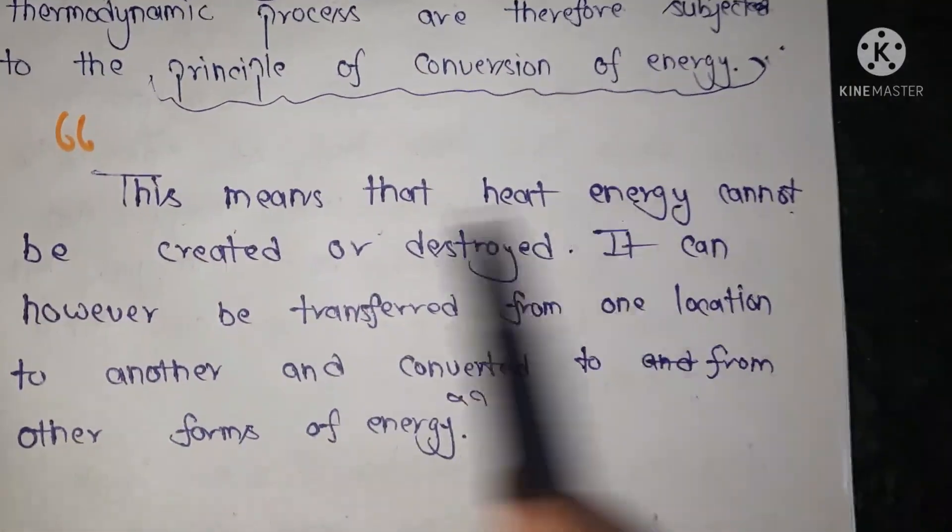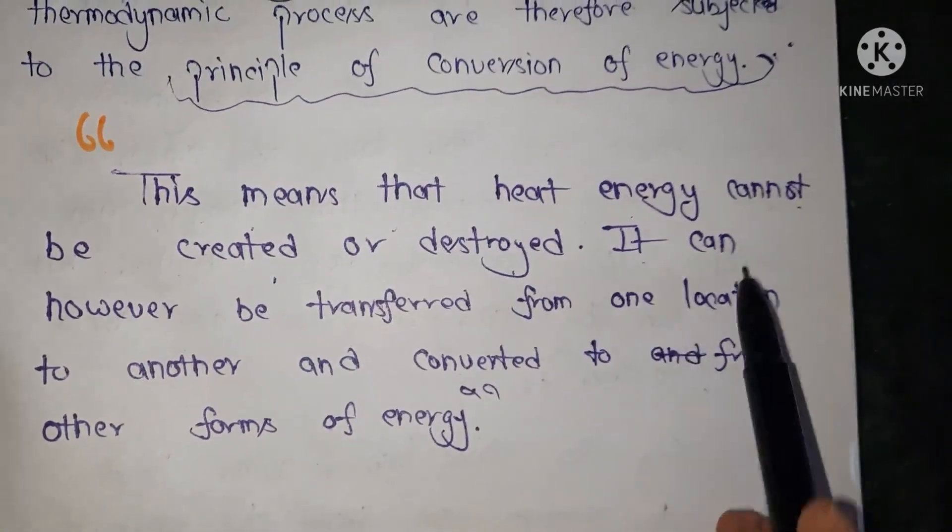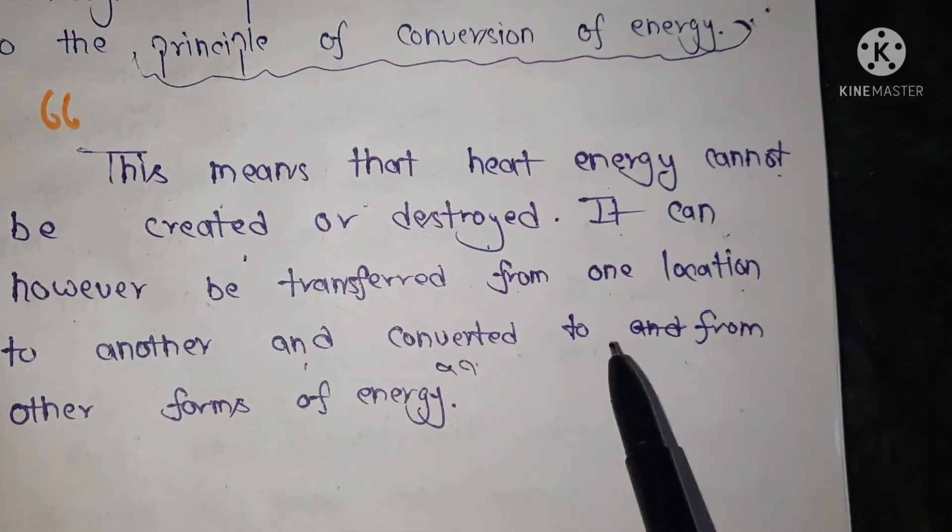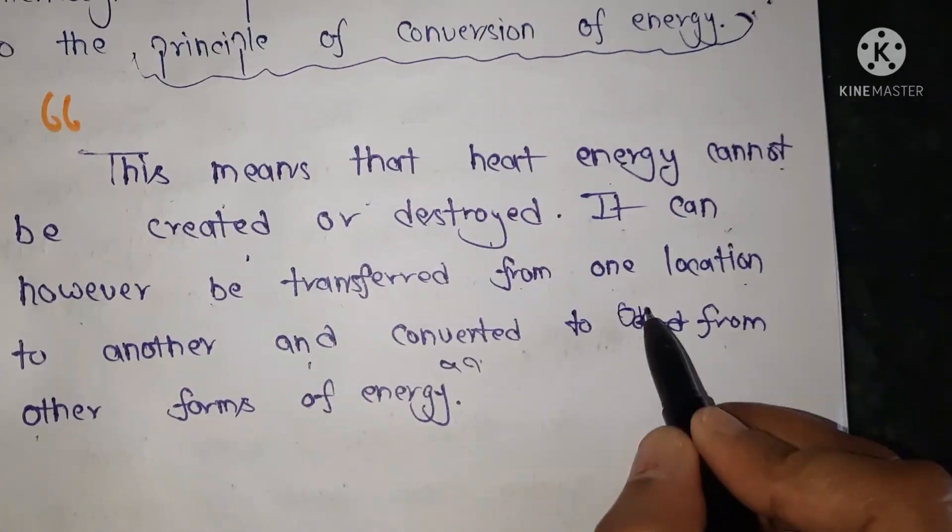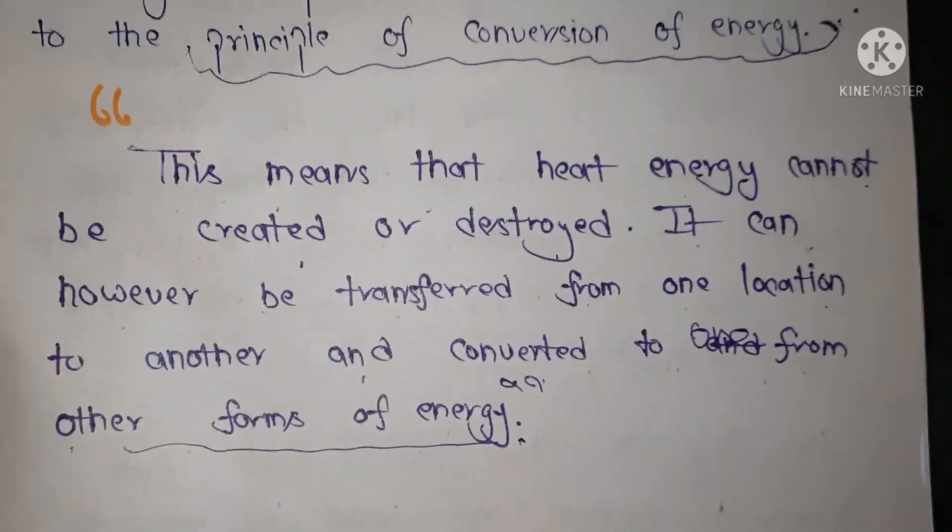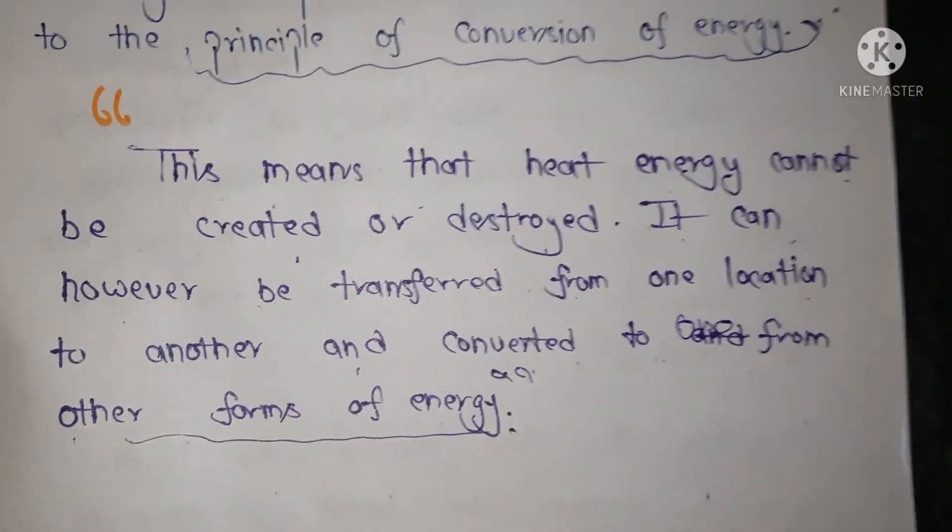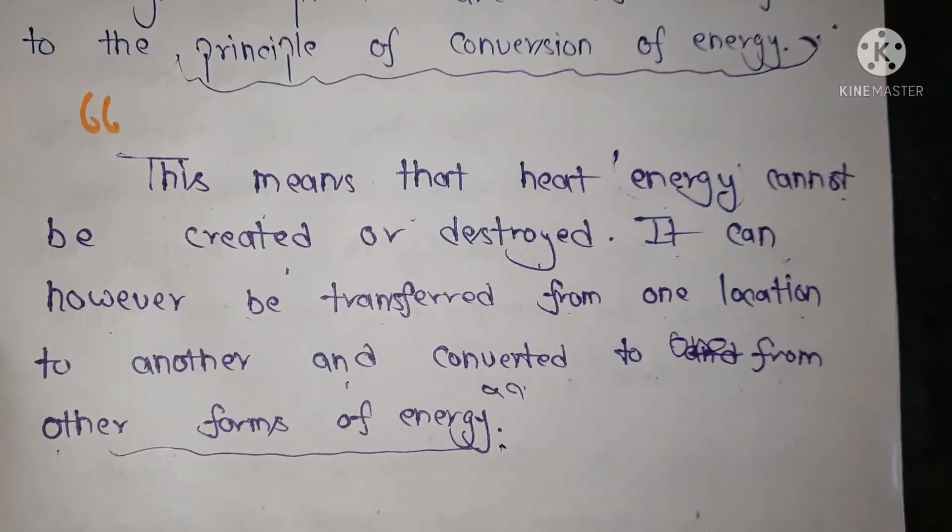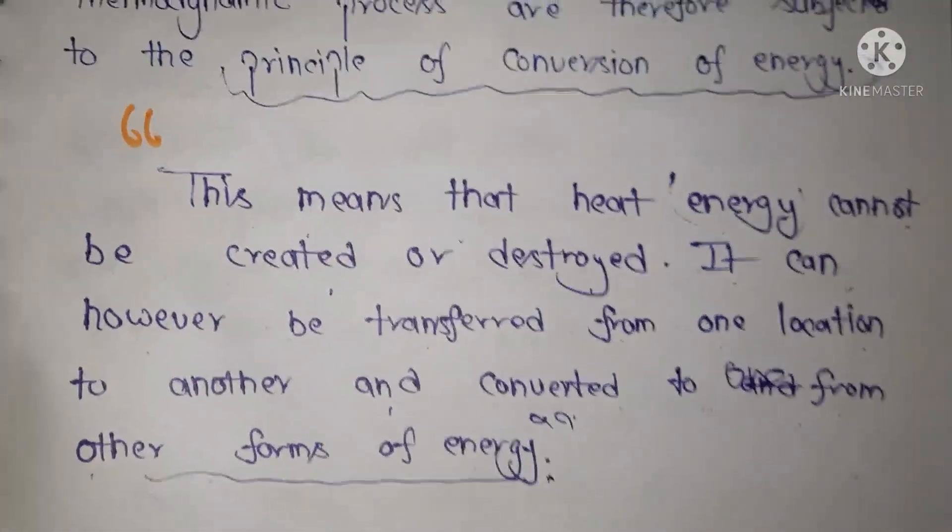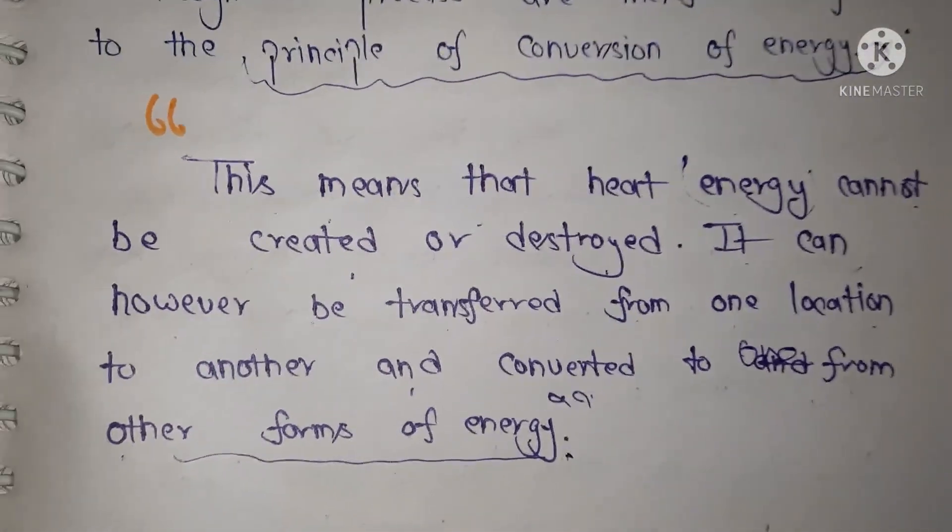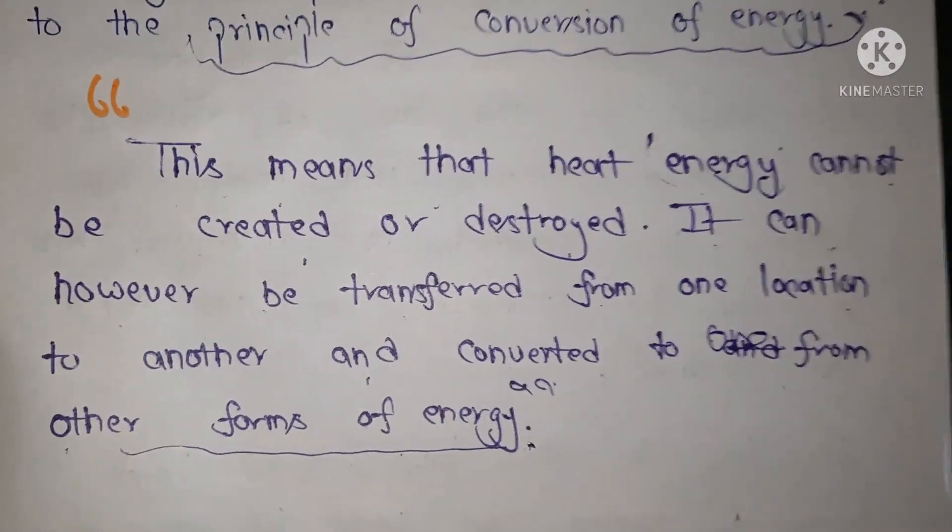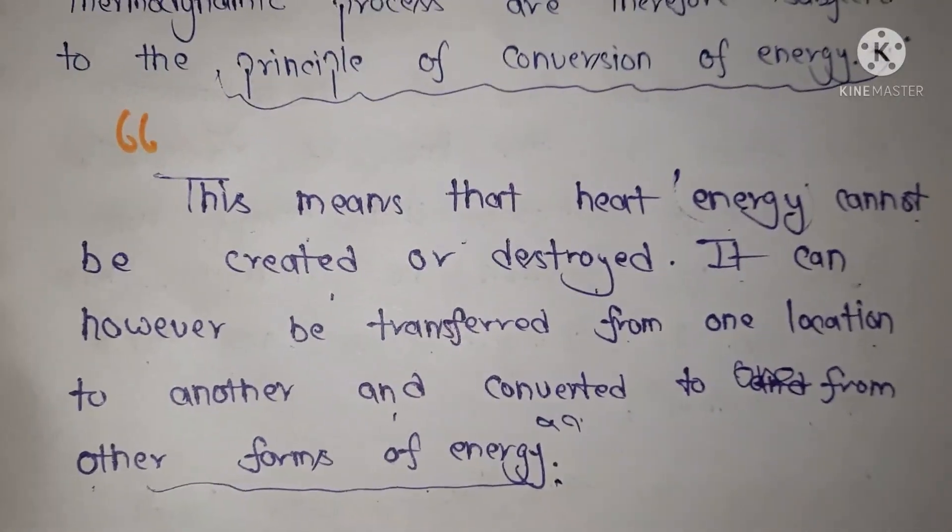This means that heat energy cannot be created or destroyed. It can however be transferred from one location to another location and converted from one form to another form of energy. For example, this first law says that heat or energy cannot be created or destroyed. You never create an energy or destroy the energy. You just change the way of energy from one state to another state, from one location to another location. So this is the first law of thermodynamics.